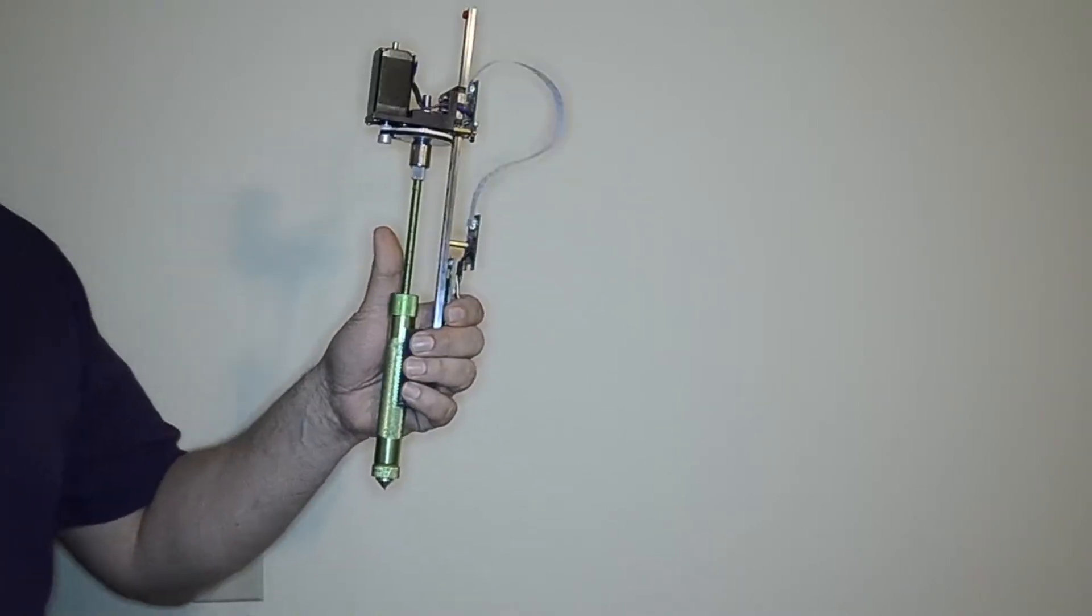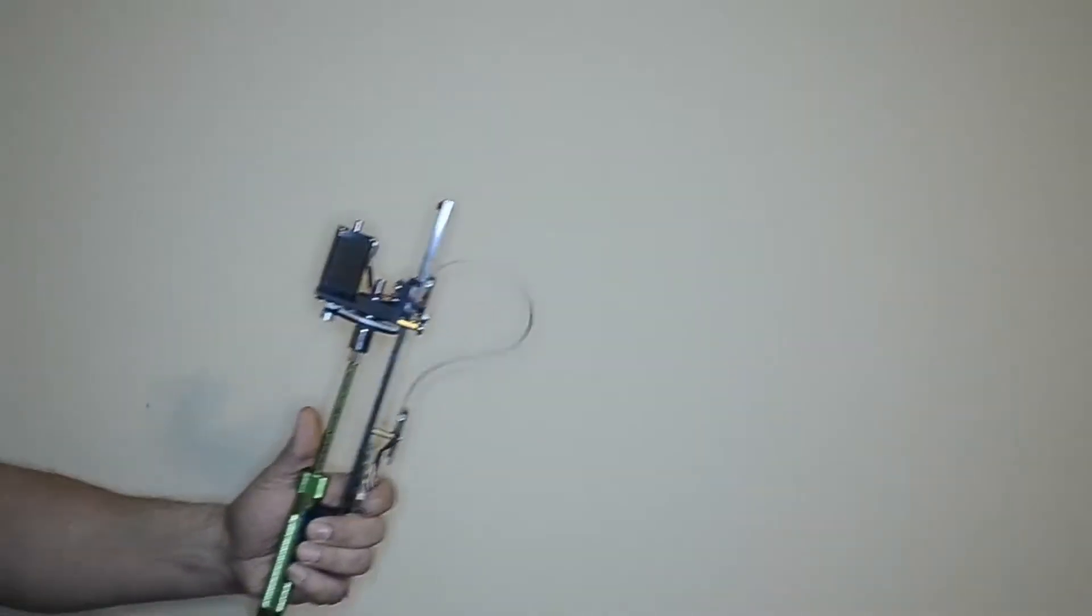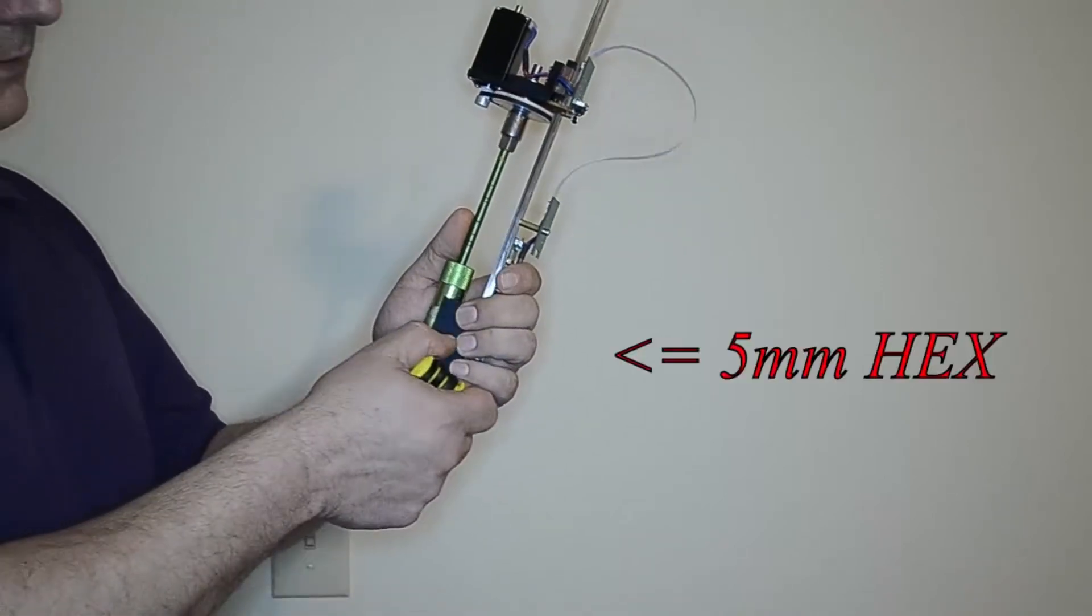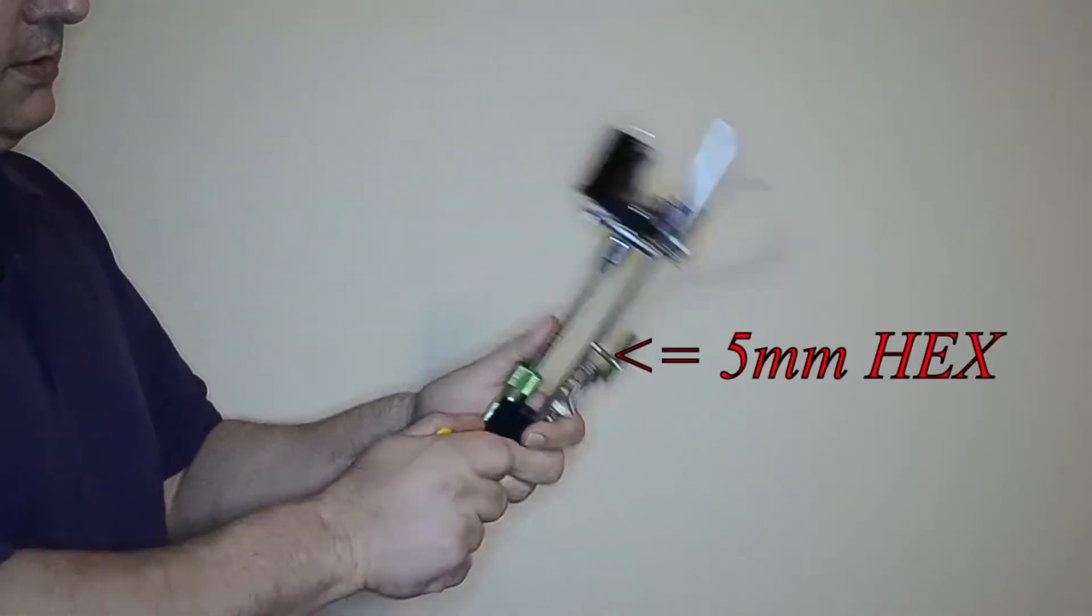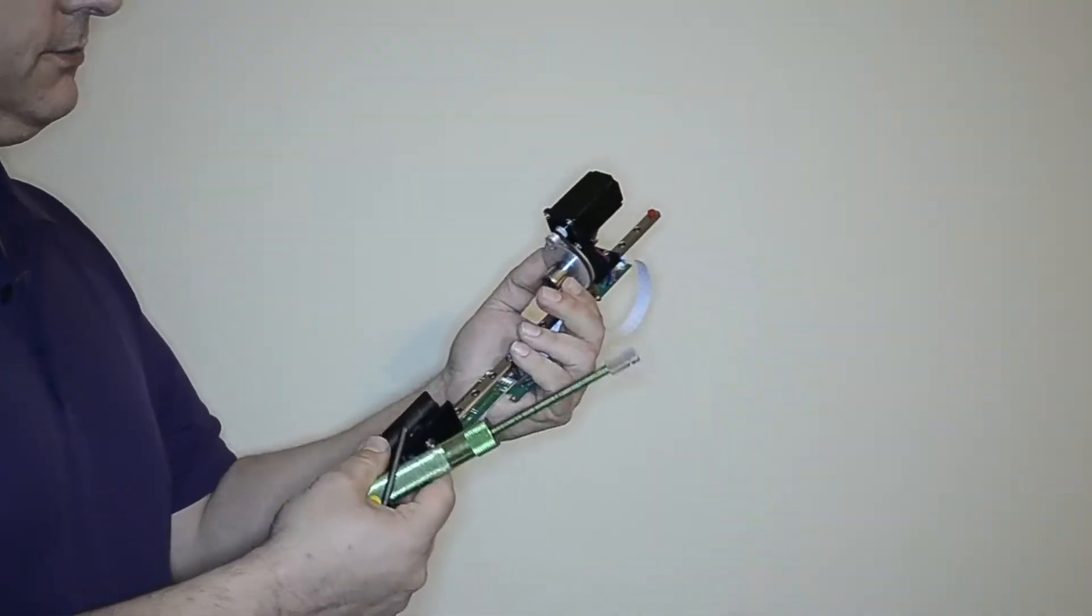After you've removed your tool from the tool position on the printer, you'll use a 5mm hex driver to separate the extruder tube from the motivator mechanism.